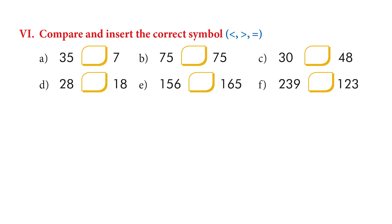The next one: 75 and 75 — yes, they are equal to each other. One more example: 30 and 48 — which is greater, which is lesser? That's right, 48 is greater and 30 is lesser.